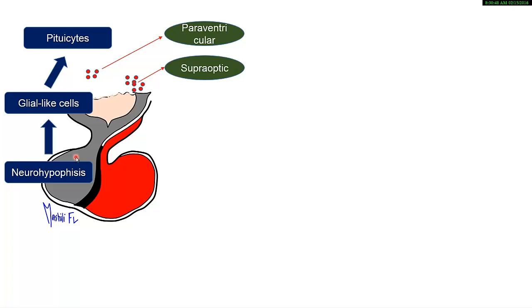For the posterior pituitary, we have two main parts of the hypothalamus that are responsible to synthesize the hormones that are released in the posterior pituitary. One is the supraoptic region or the supraoptic nuclei, which are just above the optic chiasma. And you have the paraventricular nuclei, which are prior to the ventricles.